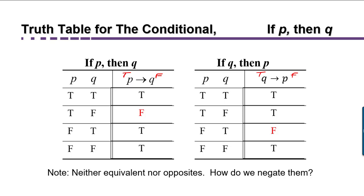Notice that these statements, P implies Q and Q implies P, are neither equivalent to each other — meaning they don't have the same truth values — nor are they opposites of each other, meaning that one is true when the other is false and vice versa.